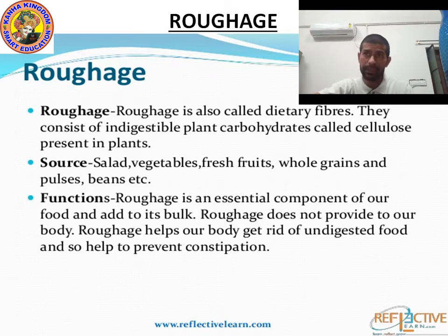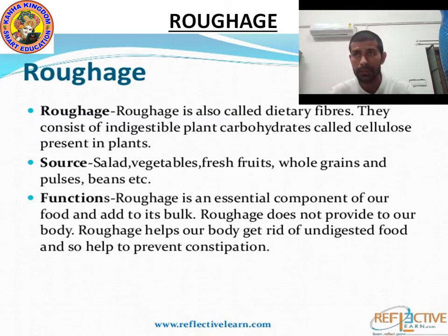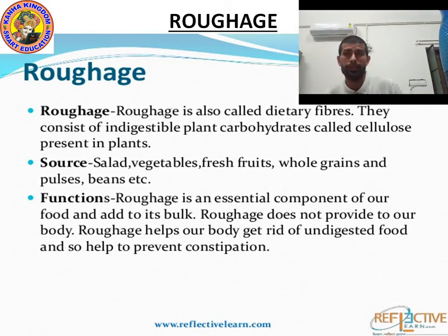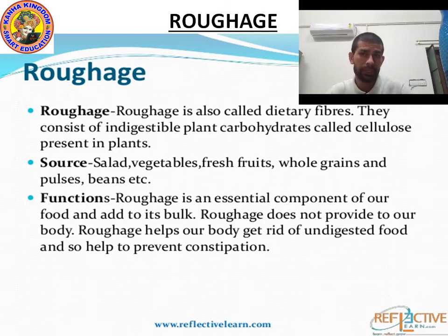What is roughage? Roughage, also called dietary fiber, consists of indigestible plant carbohydrates called cellulose. Sources of roughage include salads, vegetables, and fresh fruit. Roughage helps to get rid of undigested food, removes waste, and helps prevent constipation.